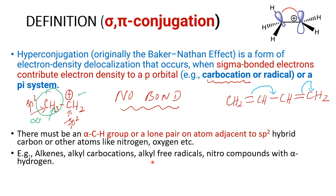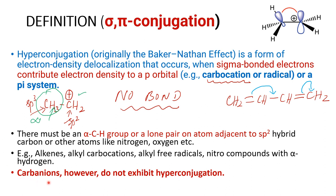Alkenes, alkyl carbocations, alkyl free radicals, and nitro compounds with alpha hydrogen atoms all show hyperconjugation. Carbanions — carbons bearing a negative charge — do not exhibit hyperconjugation. In case of a carbanion, the p orbital already has a pair of electrons, unlike a carbocation where there is a vacancy. So there is no possibility for delocalization from an sp3 orbital to the p orbital electrons, which is why carbanions do not show hyperconjugation.